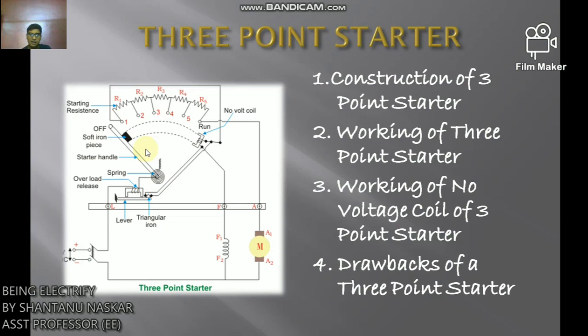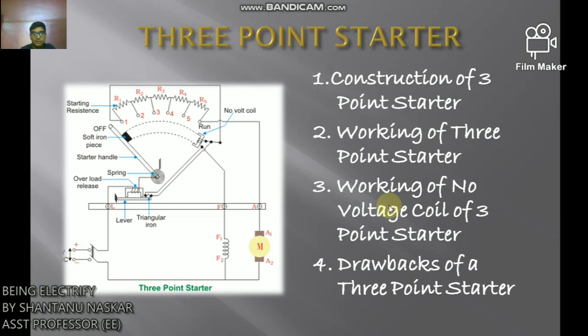The three-point starter suffers from a serious drawback for motors with large variation of speed. By adjusting the field rheostat to increase motor speed, field resistance is increased, so current through the shunt field is reduced. The field current becomes very low, resulting in the holding electromagnet being too weak to overcome the spring force. The holding magnet may release the arm of the starter during normal motor operation and disconnect the motor from the line. A four-point starter is used instead, which does not have this drawback.